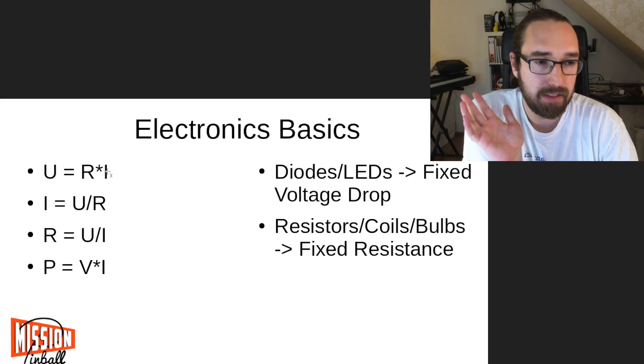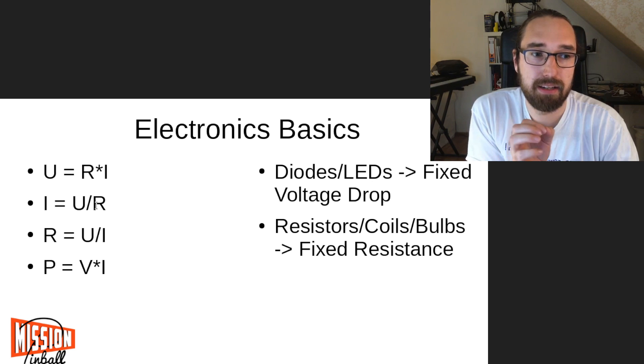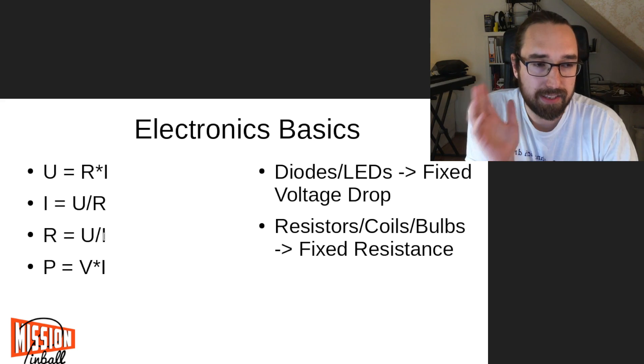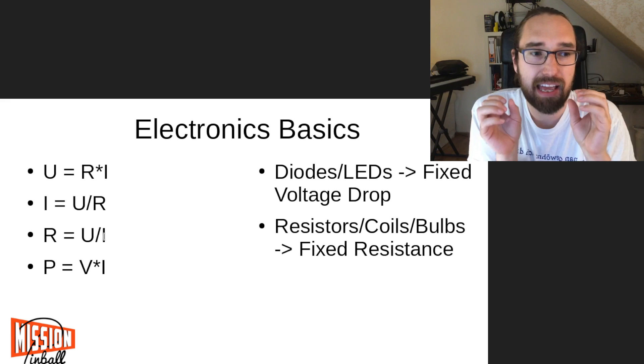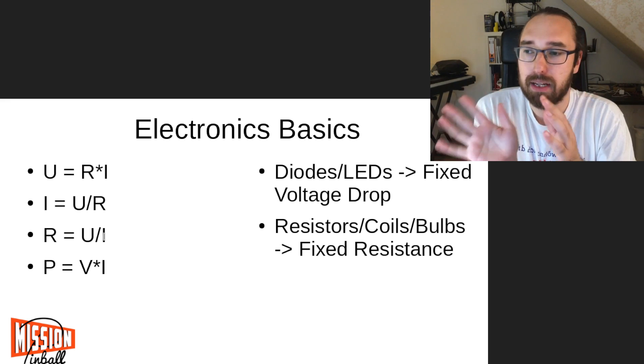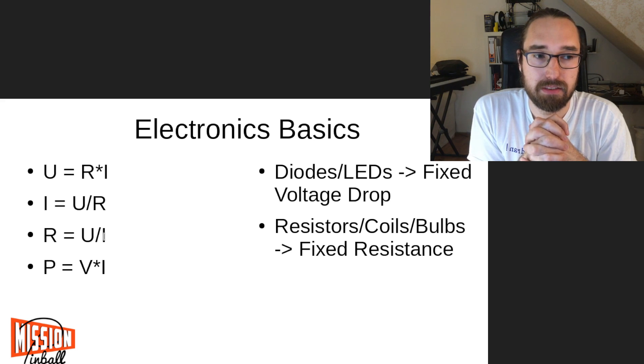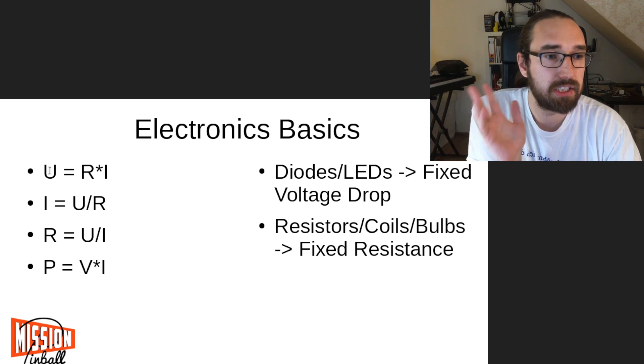Similarly, you look at the current, which is voltage divided by resistance. Or if you just transform the equation, it's also resistance equals voltage divided by current. That's the basic stuff you need to know. With that, you can calculate almost anything in your pinball machine. And really important, we will come to that in a minute, then there's P - that's for power. Power equals voltage multiplied by the current. It's that simple.